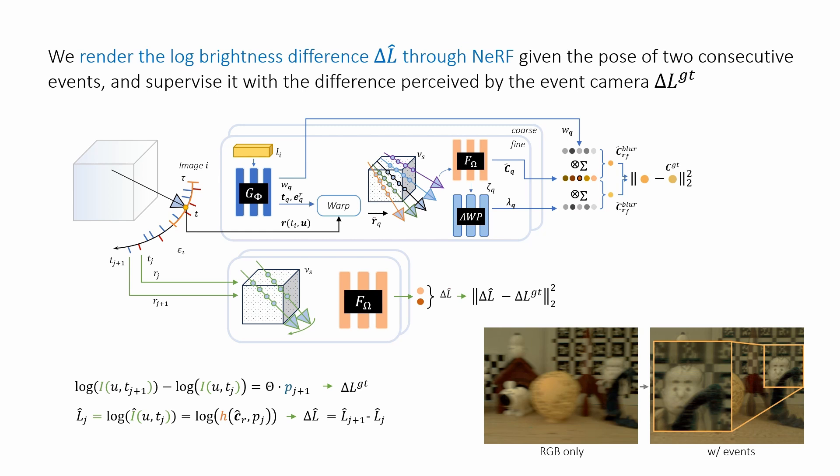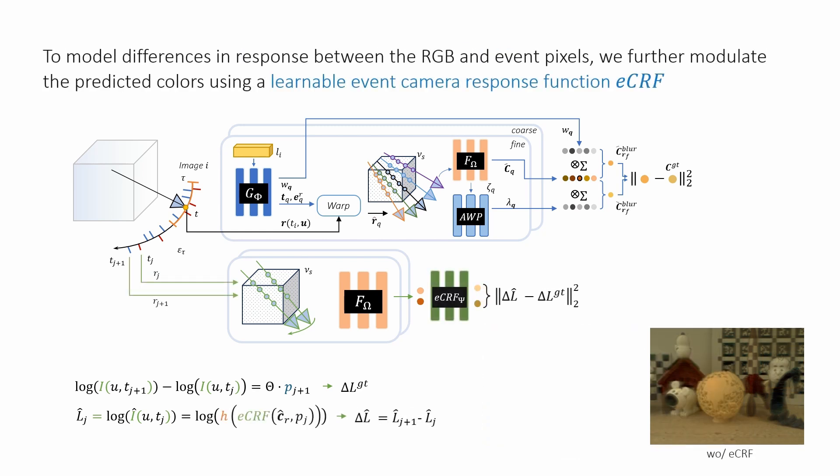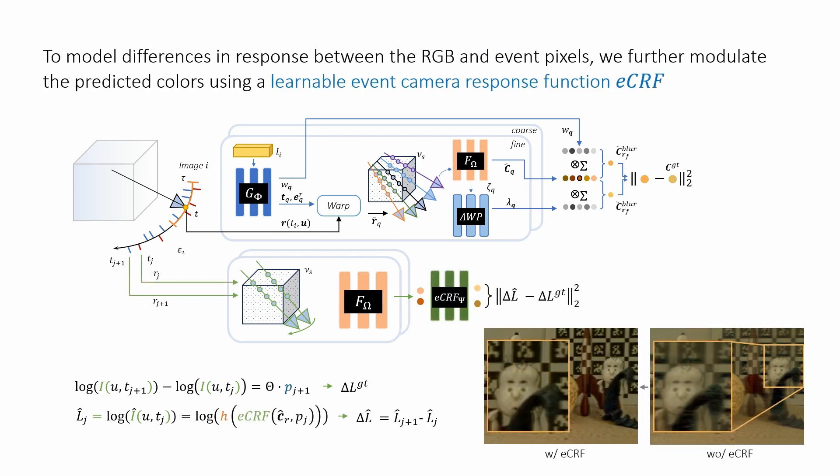However, the RGB and the event camera pixels might respond to light differently, potentially leading to suboptimal results. We address this issue by introducing an event camera response function, which learns to bridge this gap and increase robustness to event camera noise.